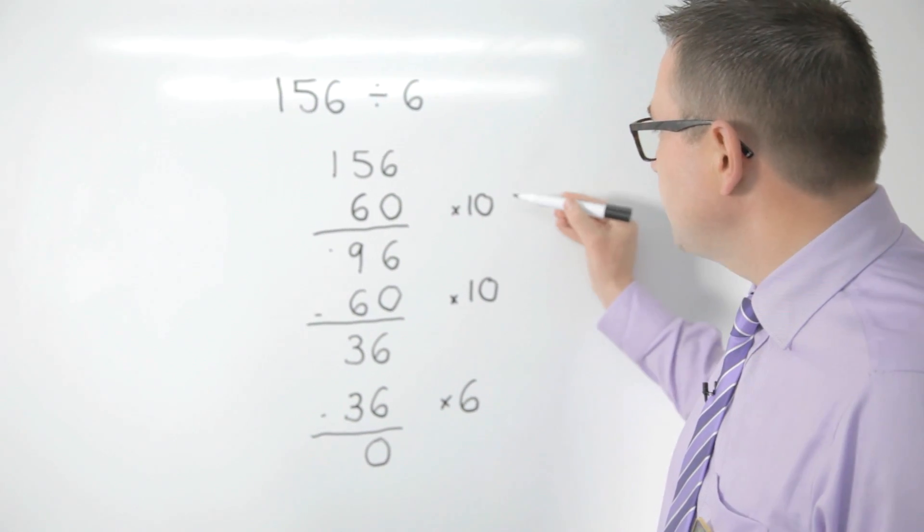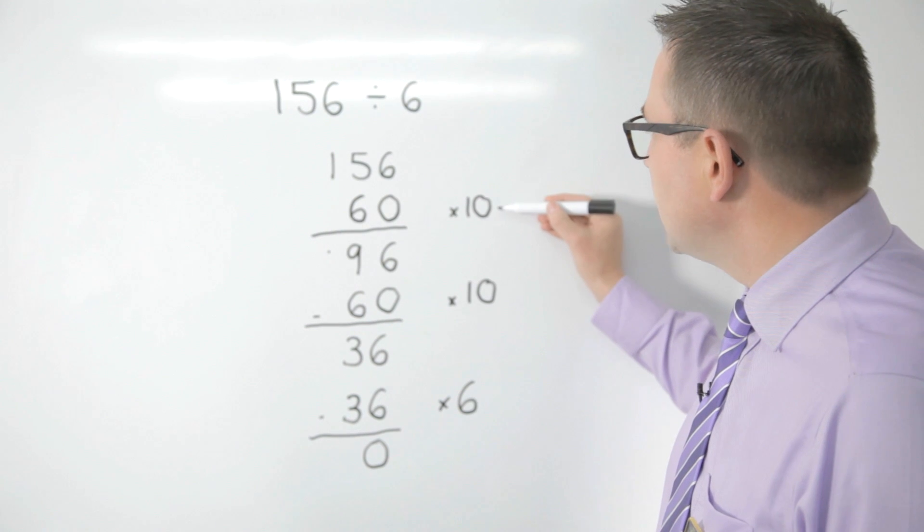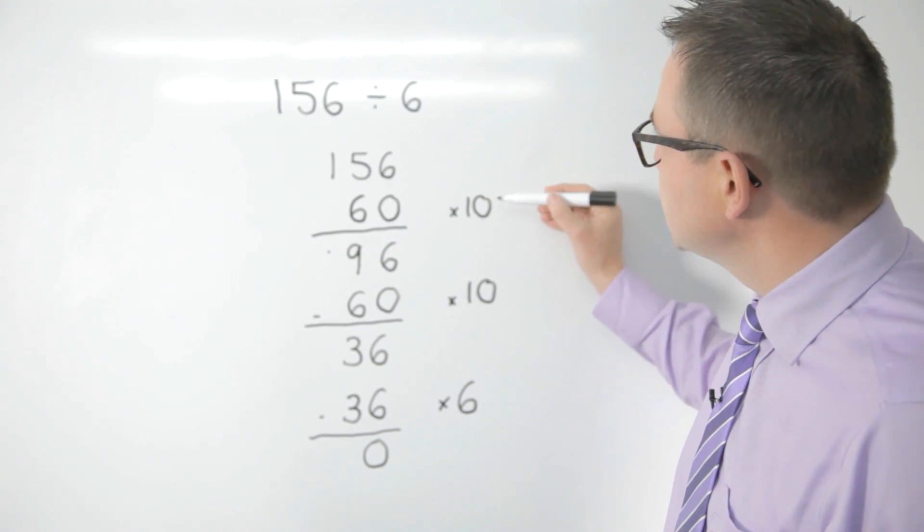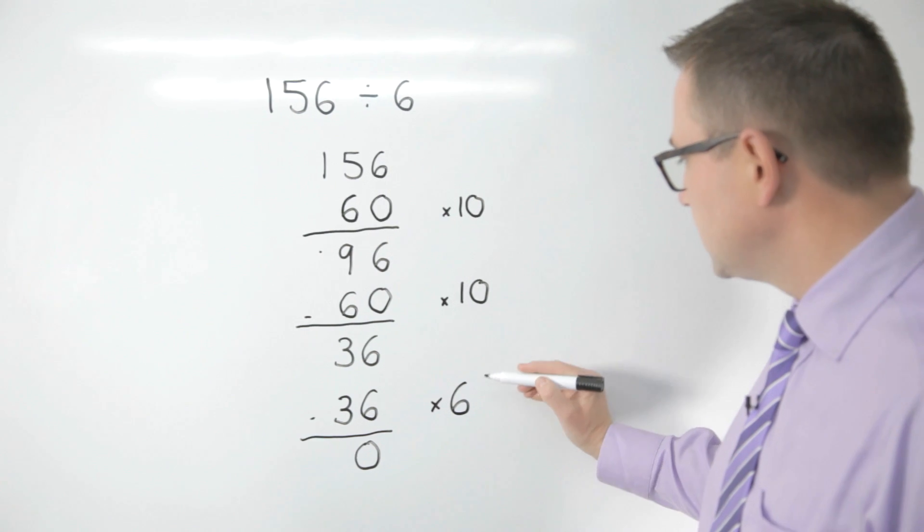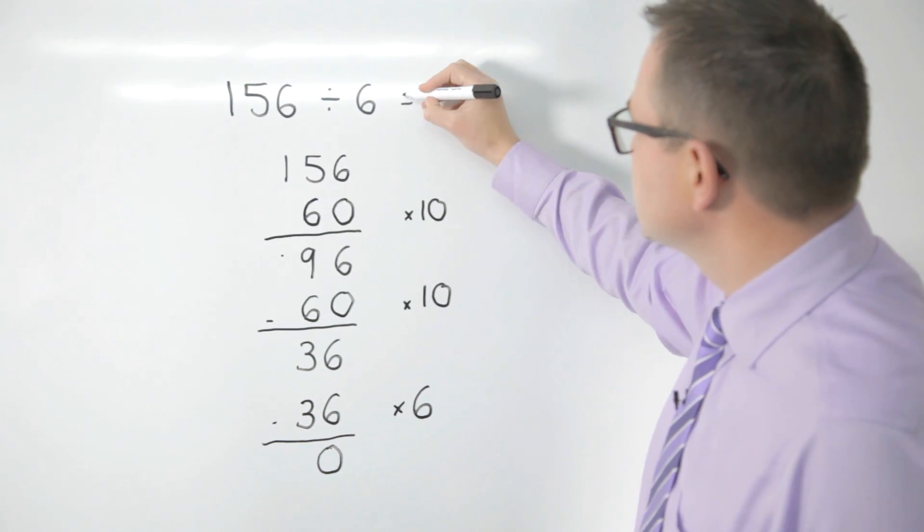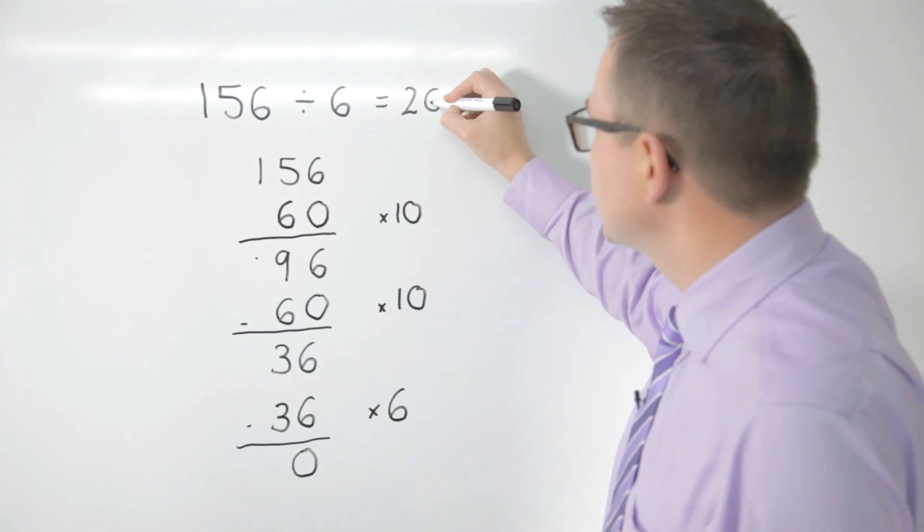So now I can count up how many lots of 6 I have found that fit into 156. 10 lots, 20 lots, 26 lots. So that's the answer to my calculation.